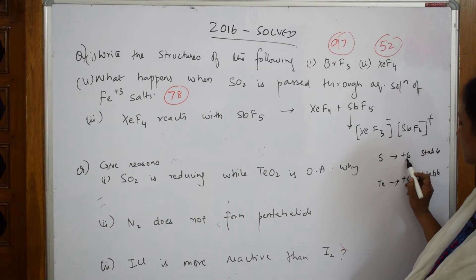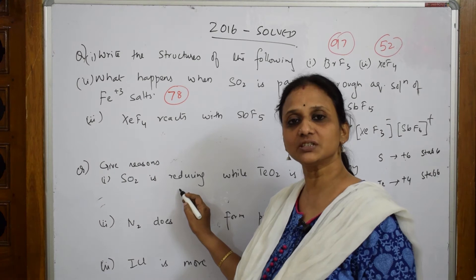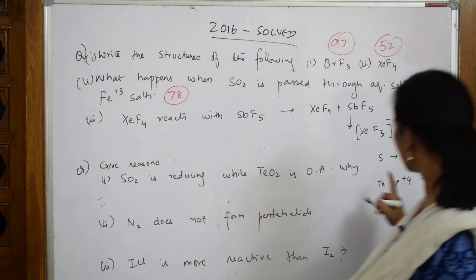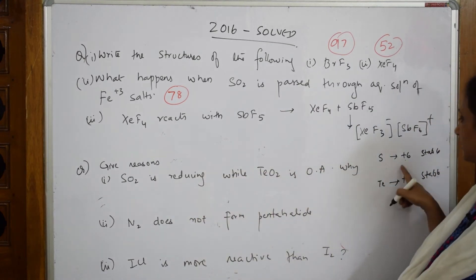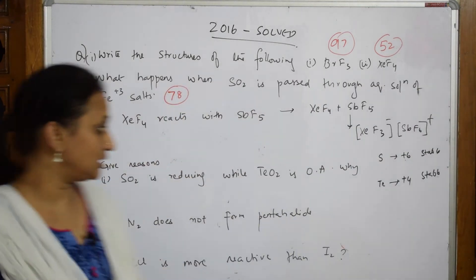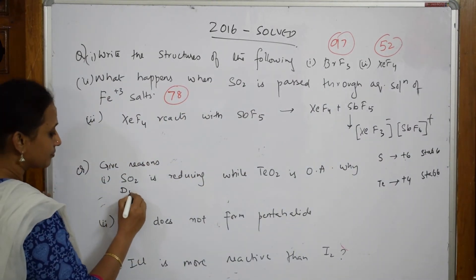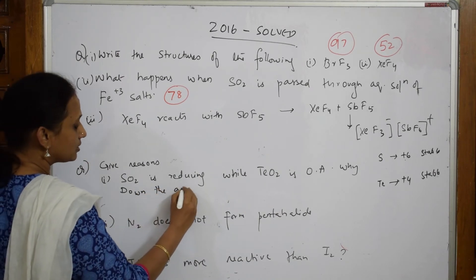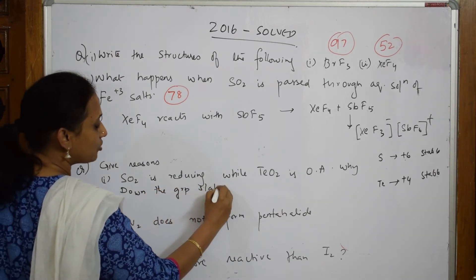Now see, when it is +6, that means it can lose electrons. When it can lose electrons, that means it is reducing in nature. Here, +4 oxidation state compared to this is less, so this is oxidizing.